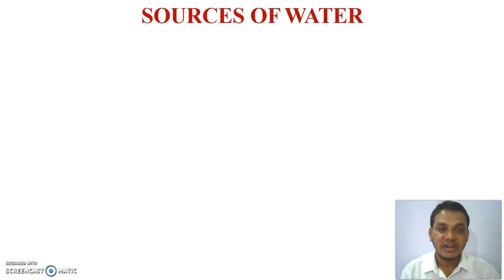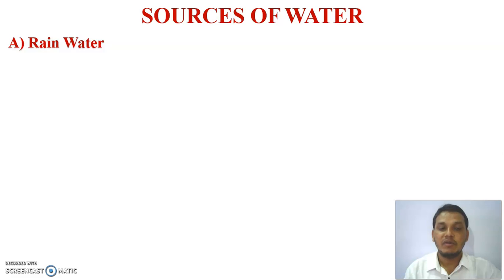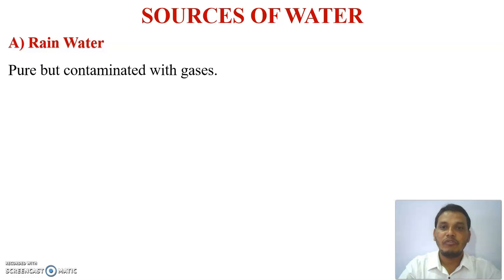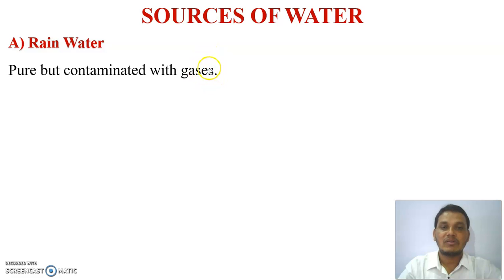There are three different sources of water. The first one is rain water. Rain water is the purest form of water, but during its passage from the atmosphere to the earth, there are a lot of impurities and gases present — like carbon dioxide, sulfur dioxide, nitrogen dioxide, hydrogen sulfide, and even chlorine.